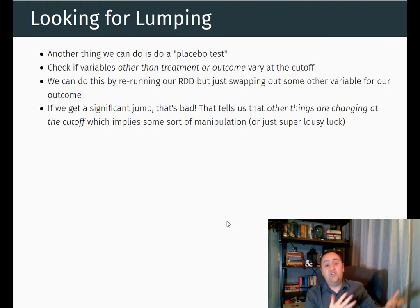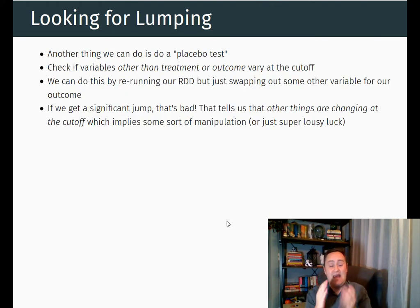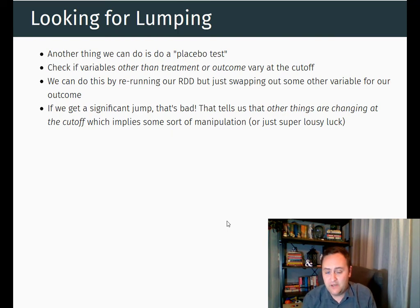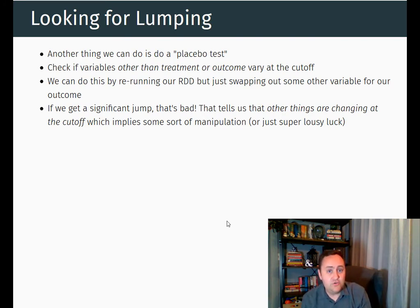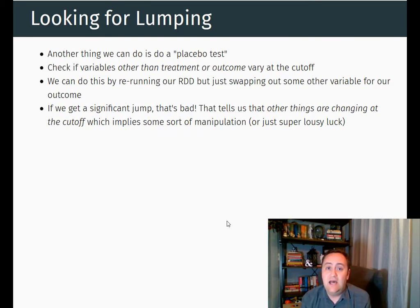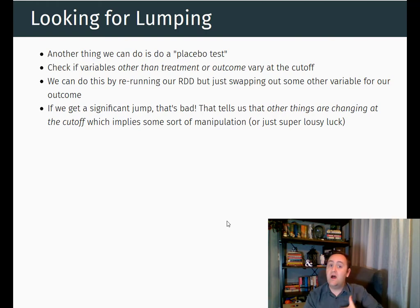One way to test for manipulation, in addition to looking at the distribution of the running variable, is to do a balance test at the cutoff. The basic idea is you take a bunch of covariates and see if they're different on either side of the cutoff. If you're basically randomly assigning treatment on either side, there shouldn't be many significant effects. But if there are a lot of significant effects, that tells us there may be some manipulation going on and the assignment is not really random.